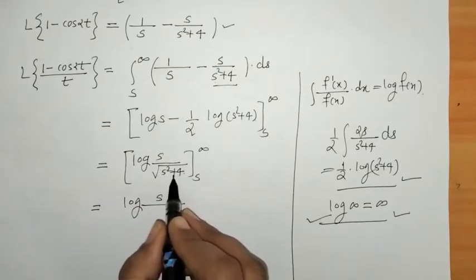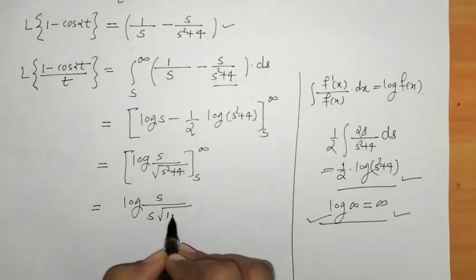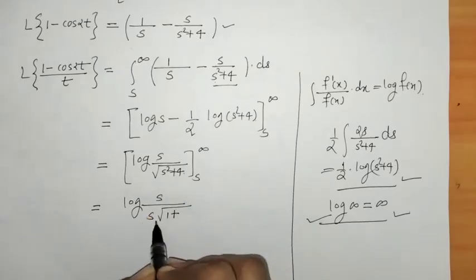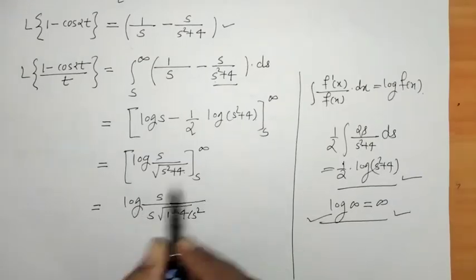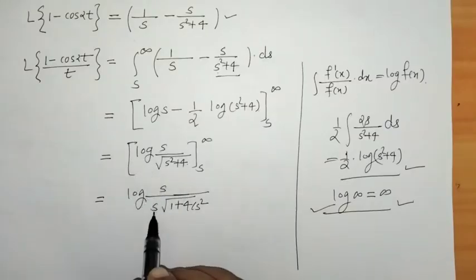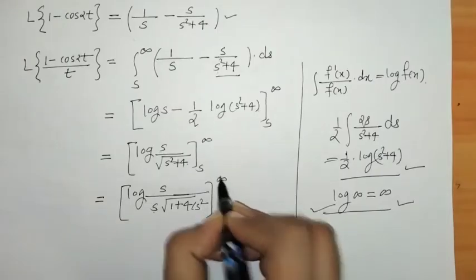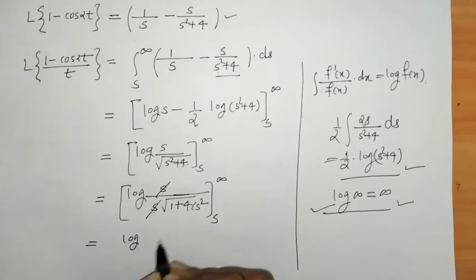We take s common from the denominator. Inside the square root, we factor out s², so √(s² + 4) = s·√(1 + 4/s²). The s in the numerator and the s factored from the denominator cancel, leaving log(1 / √(1 + 4/s²)), evaluated from s to infinity.